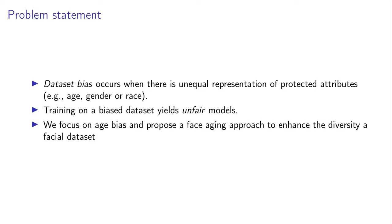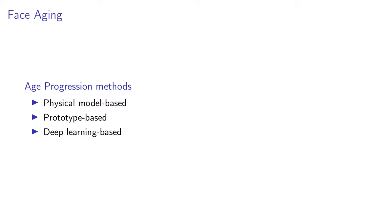We propose to enhance the age diversity of a dataset using face aging and rejuvenation. Early works in age progression were physical model-based approaches that focused on modelling biologically inspired mechanical transformations and facial anatomy. These methods were computationally expensive and cannot generalize well. Later, data-driven approaches would learn a mapping between age-class prototypes, like class means. These age progression methods suffered from loss of identity information, resulting in unrealistic aging results.